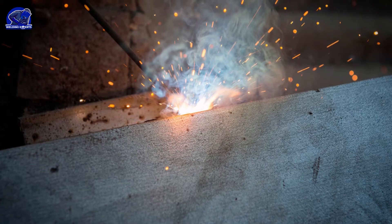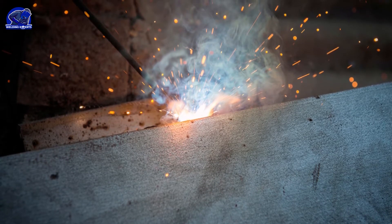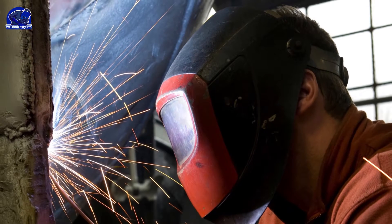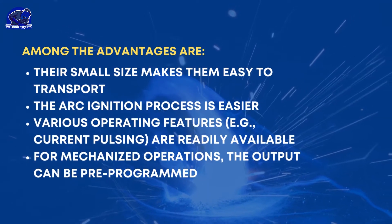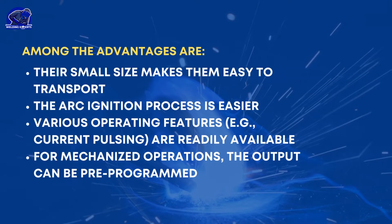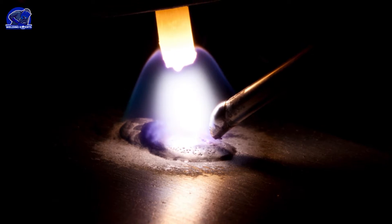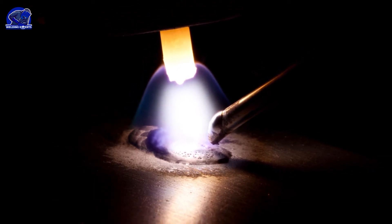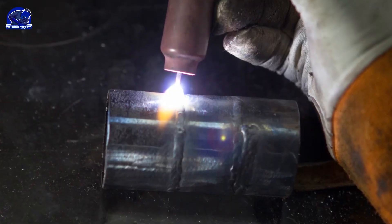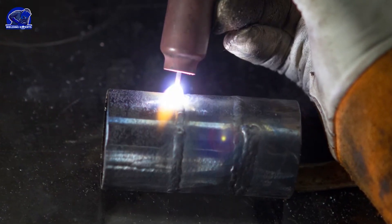Power sources such as transistors and inverters are becoming more prevalent for TIG welding. Among the advantages are: their small size makes them easy to transport; the arc ignition process is easier; various operating features, for example current pulsing, are readily available for mechanized operations; and the output can be pre-programmed. Micro-TIG welding can be done with very low currents due to the greater stability of these power sources. Plasma welding has largely been replaced by these methods for micro-welding.